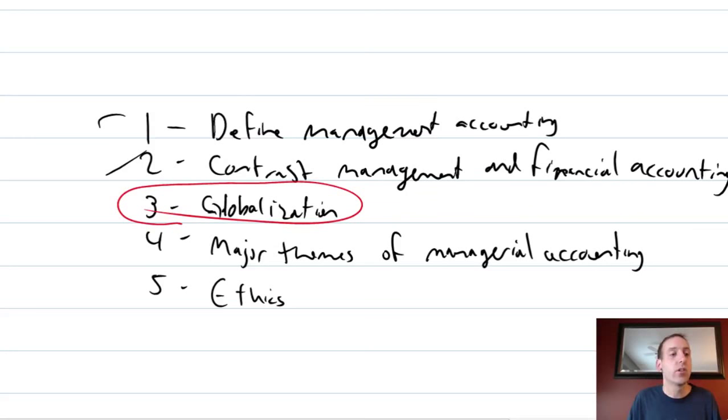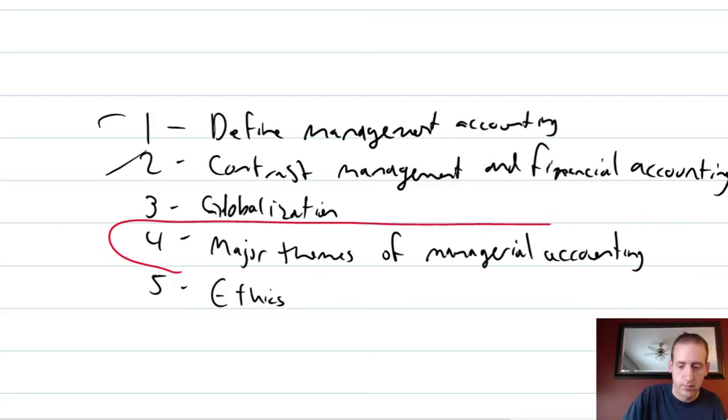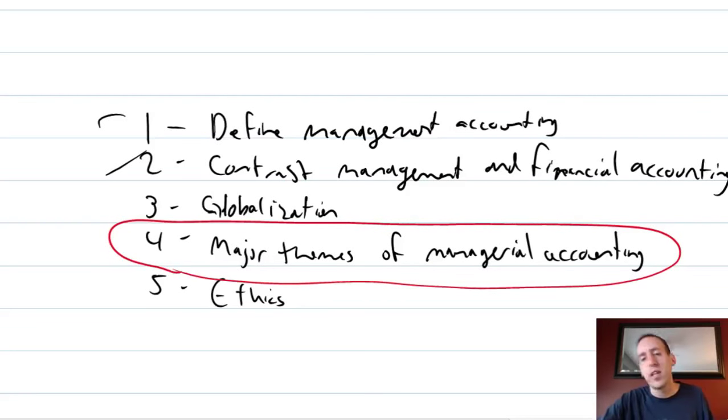So I hope I've made the point that globalization has driven competition, and increased competition means that companies have to constantly be trying to use their resources more efficiently and more effectively. Other major themes in managerial accounting. So moving on to our fourth of our five points. I've looked at various accounting textbooks, and they have all sorts, it's a grab bag of topics. Here are some of the topics that you'll see come up all over the place. JIT. And JIT stands for just-in-time. Just-in-time inventory methods.